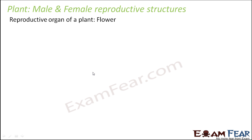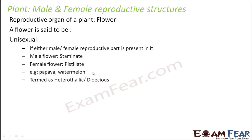The reproductive organ of a plant is the flower. A flower can be of different types based on its male and female reproductive structures. A flower is said to be unisexual if either the male or female reproductive part is present in it — 'uni' means one — so either the male reproductive part or the female reproductive part will be present.